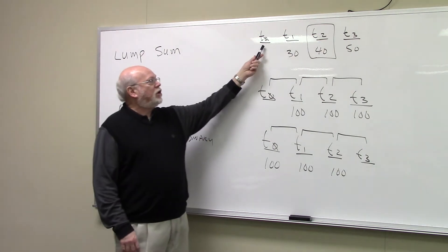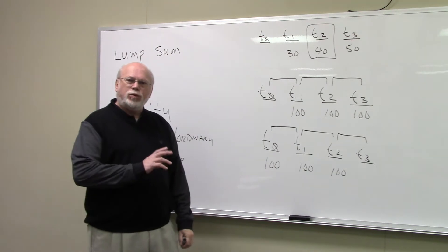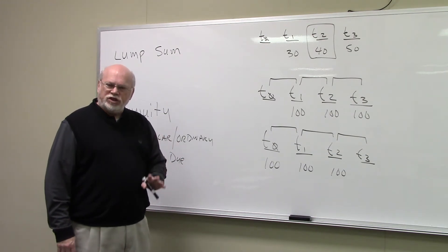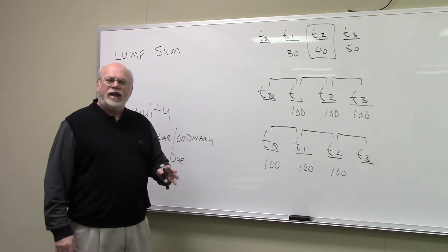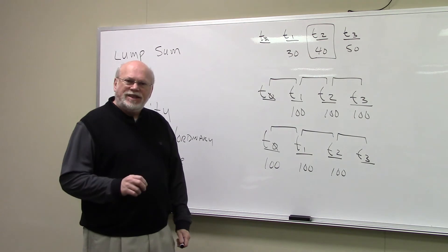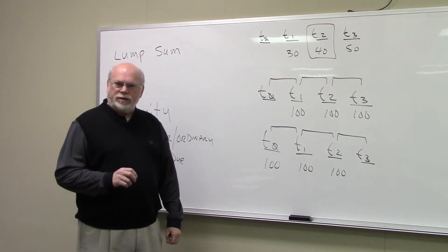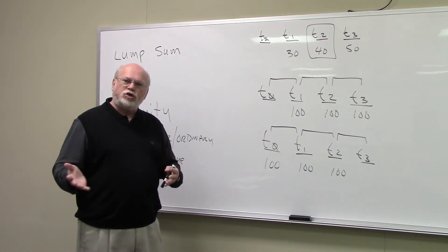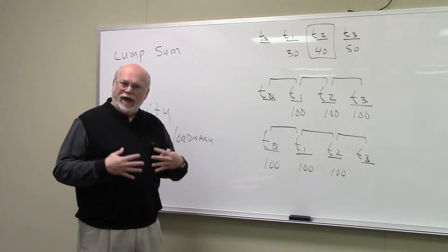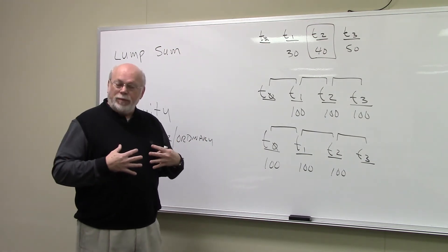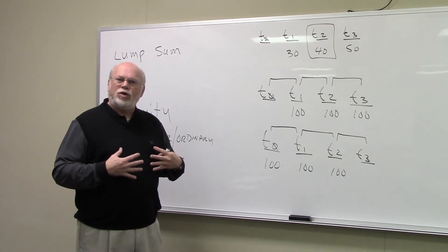I want to talk about these time subscripts: T0, T1, T2, T3, and so on. That's usually the way that cash flows are discussed in textbooks and courses. T0 is an important time period — it's right now, it's the present. There will be a lot of applications in finance where we talk about finding the present value of all the future cash flows, meaning we're valuing everything at time period zero. We usually do that because we have to make decisions today and we want to know the value of all the money today.